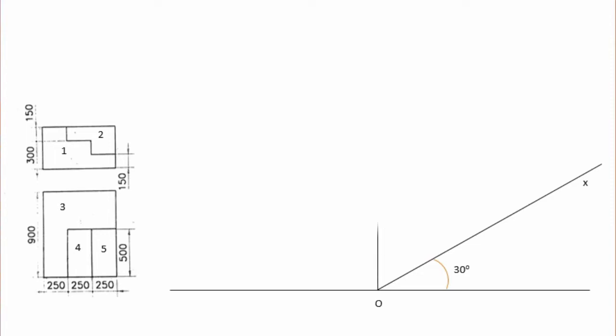This is the y-axis. This is the base line. This is the 90-degree vertical line — the z-axis. You have the y-axis and the z-axis. The base line is at 30 degrees.